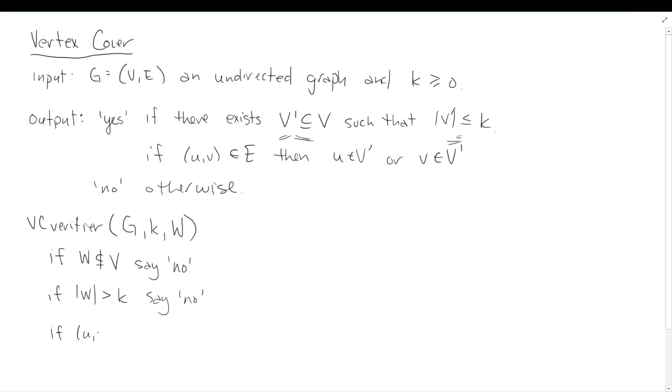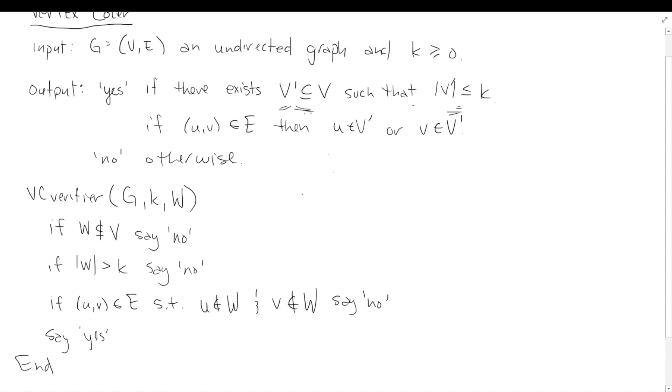So if u, v is an edge, now we're going to look to see if it's violated. So if u, v is an edge such that u is not in W and v is not in W, then we'll say no. Because this test here is saying if we can find an edge where neither of its endpoints are covered, then we have an uncovered edge, we should say no. If we pass this one, we've got all the conditions in my yes criteria here, so I must be able to say yes.